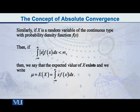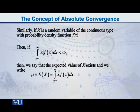Similarly, if X is a continuous variable, then if the integral from minus infinity to infinity of the absolute value of x times f of x — that is, the absolute value of x times f of x — if this integral is less than infinity, in other words if it is finite, then we say that the expected value of X exists, and we write μ equal to E of X equal to the integral from minus infinity to infinity of x times f of x with respect to x. So the same formula that we are aware of.